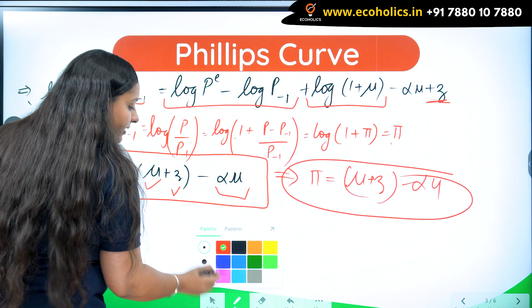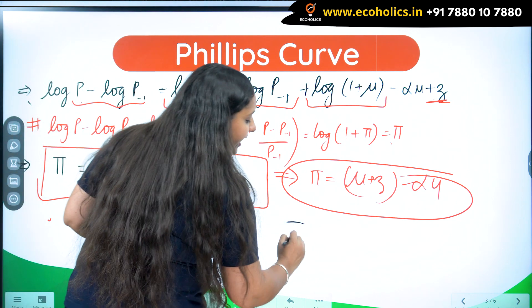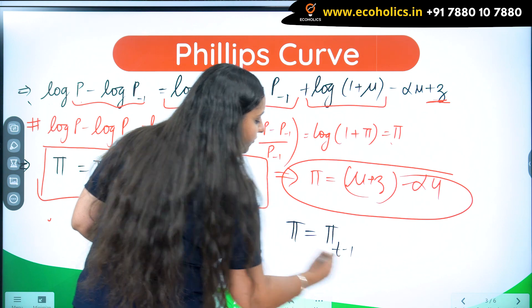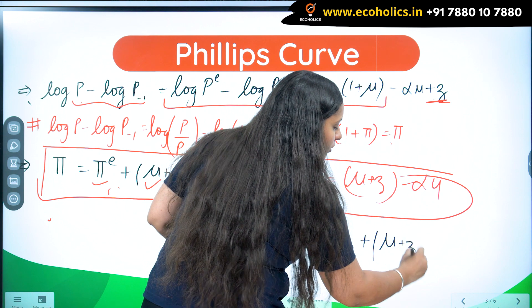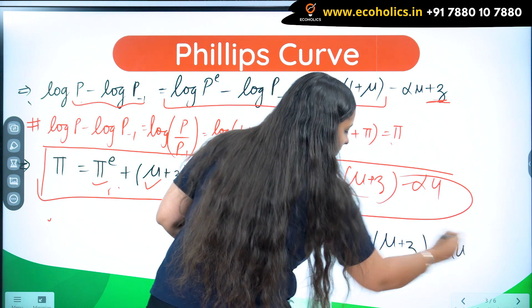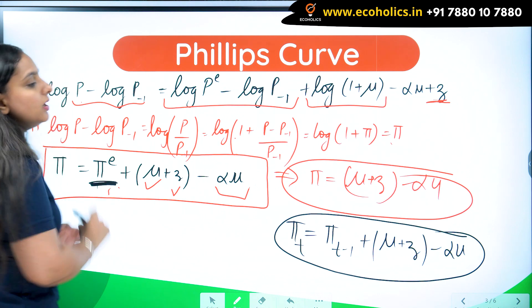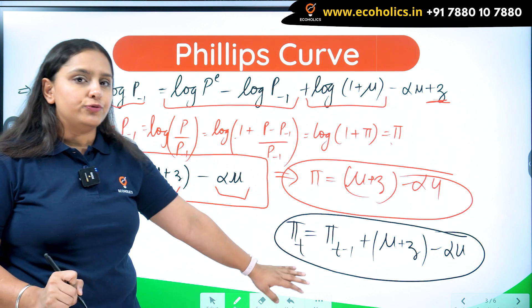If I try to make it augmented Phillips curve, the modified one where we believe expected inflation is just equal to previous year inflation, this is what I am going to get in my equation. Just by changing the value of pi e here, I can get my different forms of the Phillips curve.